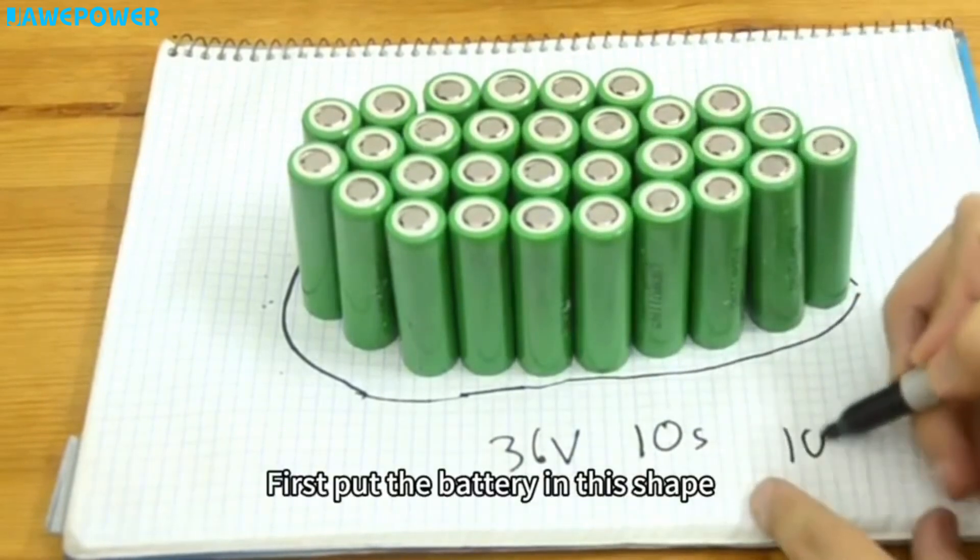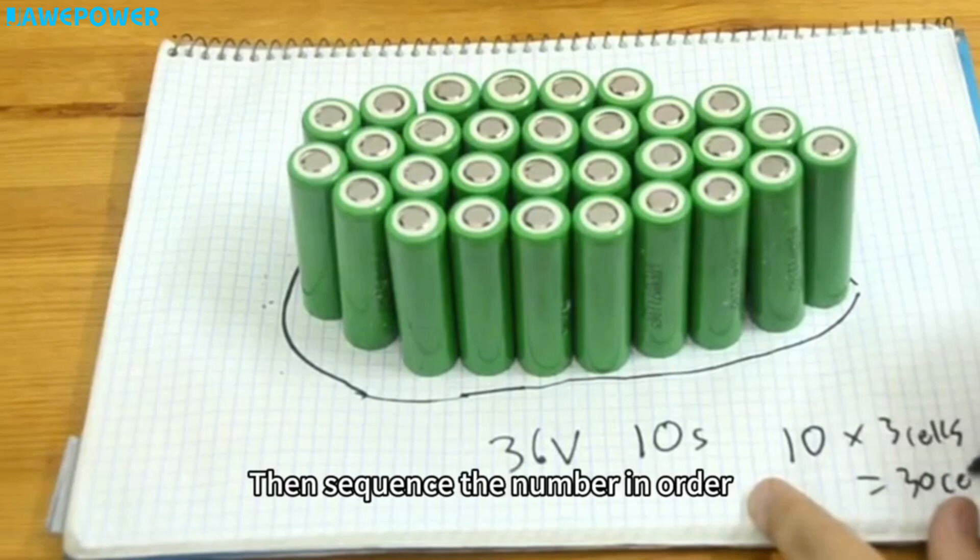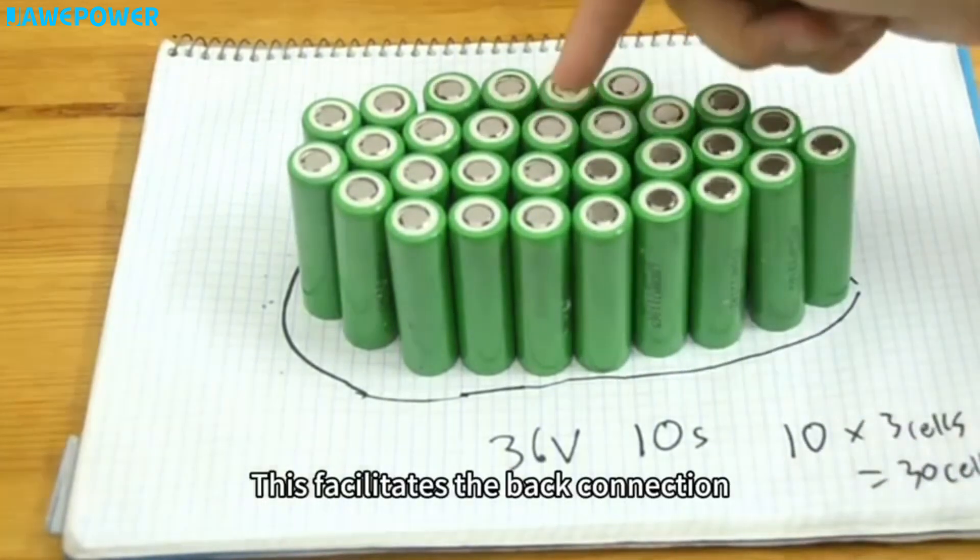First, put the batteries in the shape. Then, sequence the numbers in order. This facilitates the back connection.